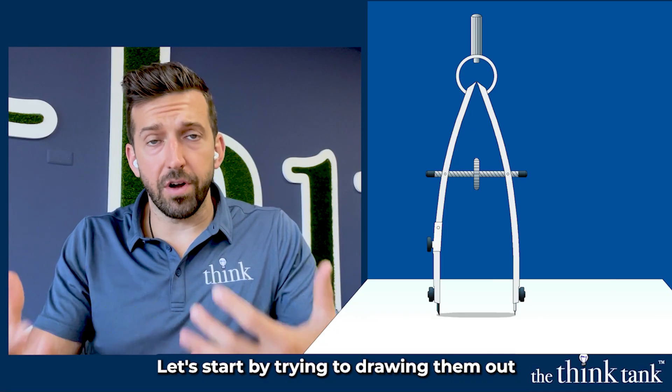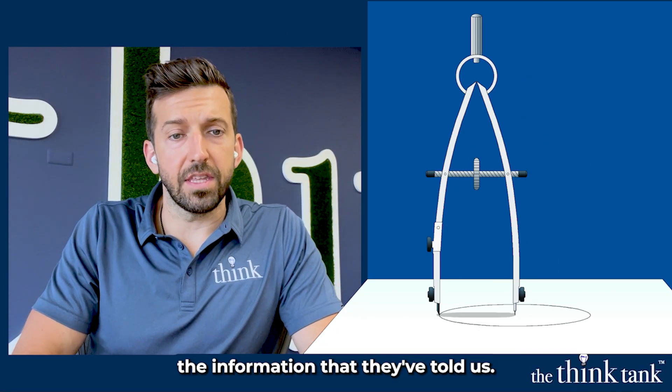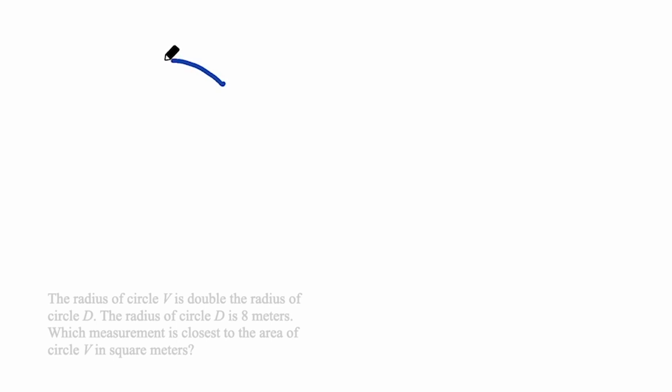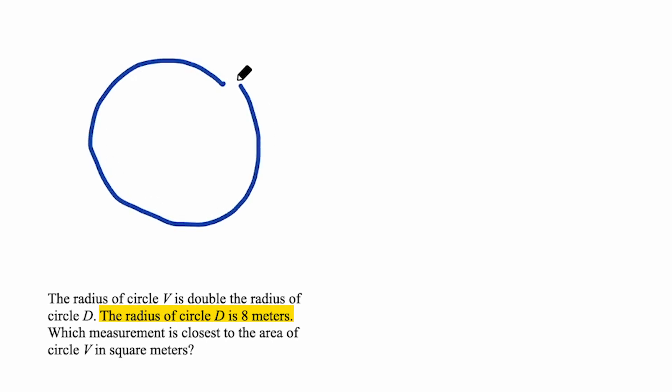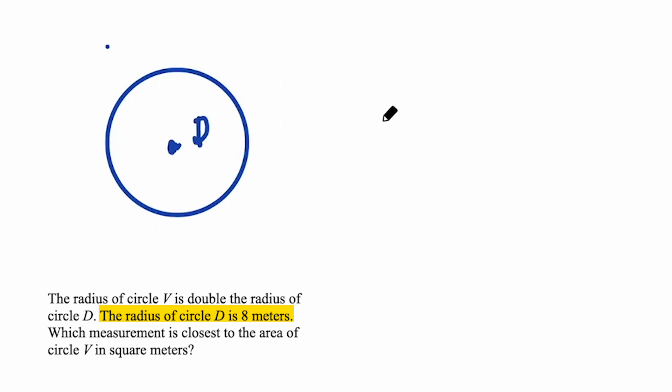Let's start by drawing them out and visualizing the information. We've got circle D, which is smaller, so I'll draw that here. Usually when we name a circle, we name it based on its center point, so the center point of this circle is going to be D.